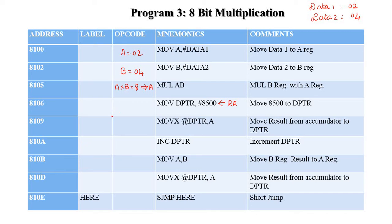The accumulator contains the multiplication result 08H, which is moved to the data pointer location 8500H. Then we increment the data pointer to 8501H. The B register content — which is 00H — is moved to the accumulator, and that value is then stored at data pointer location 8501H. So 8501H contains 00H. Then the program is stopped.